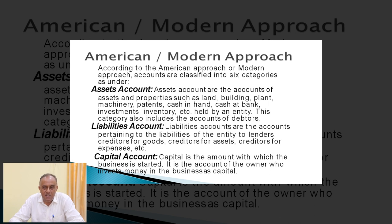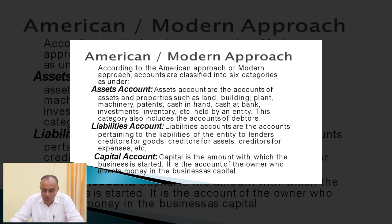Next is capital. Capital is the amount with which the business is started. It is the account of the owner who invests money in the business as capital — anything invested by the owner towards the business is known as capital. It is a part of the modern approach under classification of accounts.